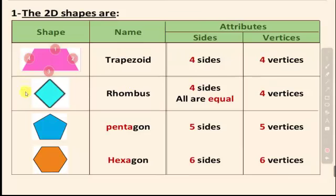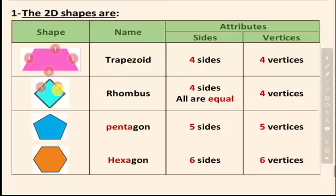The next shape — let's count: one, two, three, four — four vertices. This shape is called the rhombus. The rhombus has four sides and four vertices, and like the square, all sides are equal.